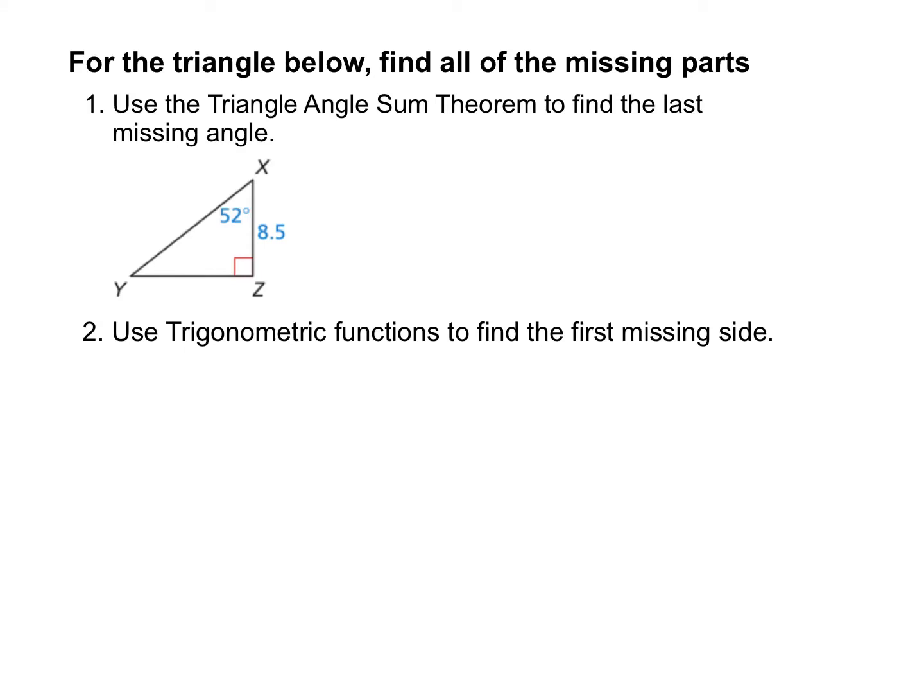Here's our final example for Lesson 7.4. We're going to solve the triangle by finding all of its missing parts. You can see here that we have one angle and one side. We also know this angle is 90 degrees.